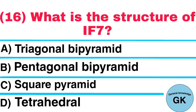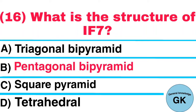Question number 16. What is the structure of IF7? A. Trigonal bipyramid, B. Pentagonal bipyramid, C. Square pyramid, D. Tetrahedral. Answer: Pentagonal bipyramid.